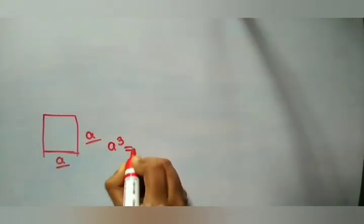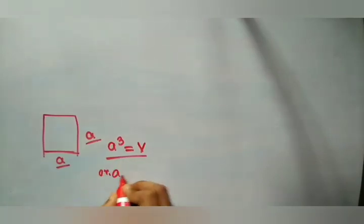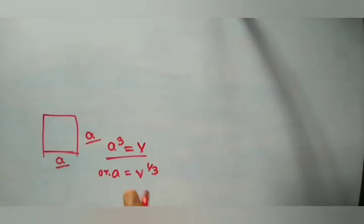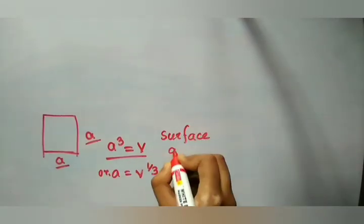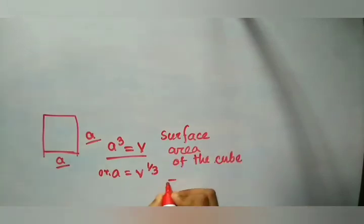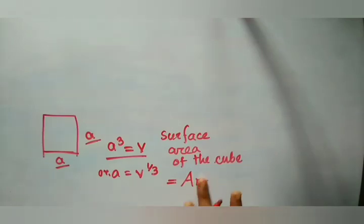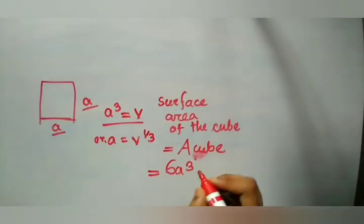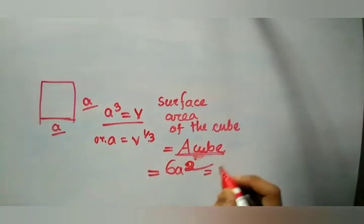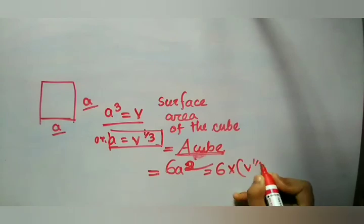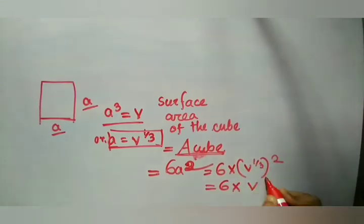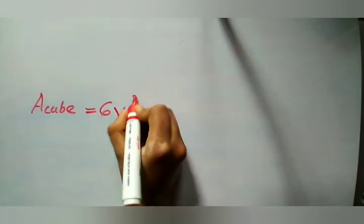If you consider a cube of edge length a, where every side is equal, then the volume is a³, and from here we get a equals V^(1/3). So the surface area of the cube is 6a², and substituting the value of a, the surface area equals 6 times V^(2/3).